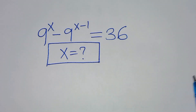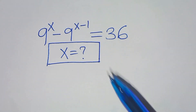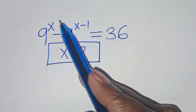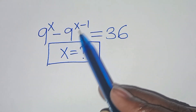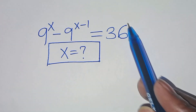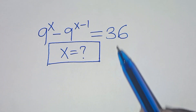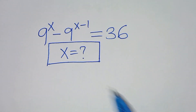Hello everyone, you are welcome to solve this nice exponential equation: 9 to the power of x minus 9 to the power of x minus 1, equals 36. What is the value of x?